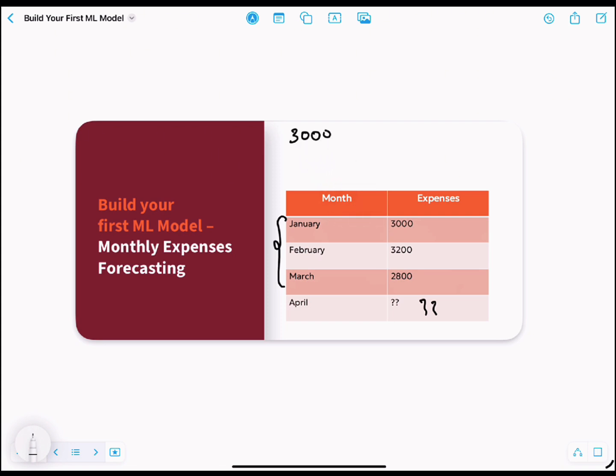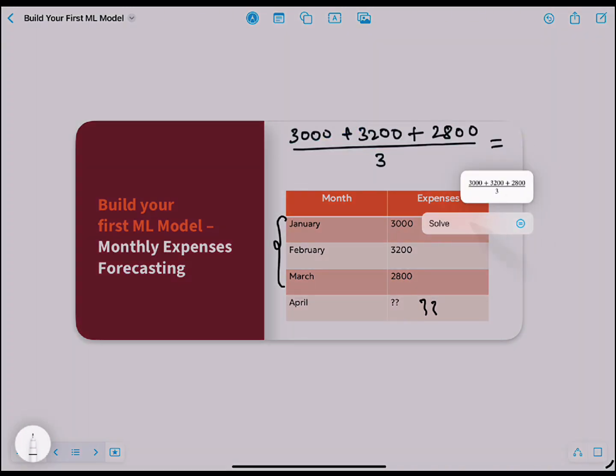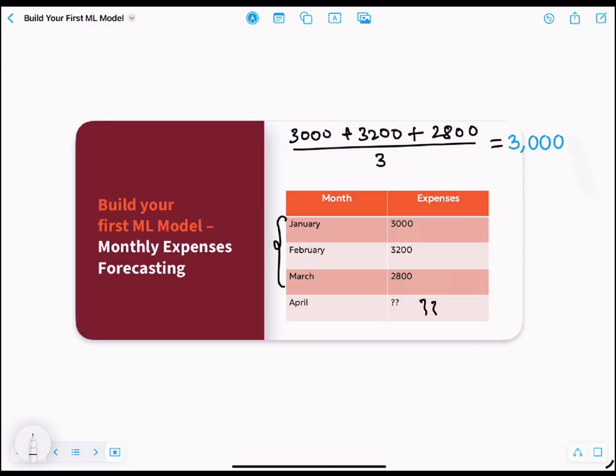So we can take the numbers 3,000, 3,200, 2,800, take the average divided by 3, and that's it - we got 3,000.